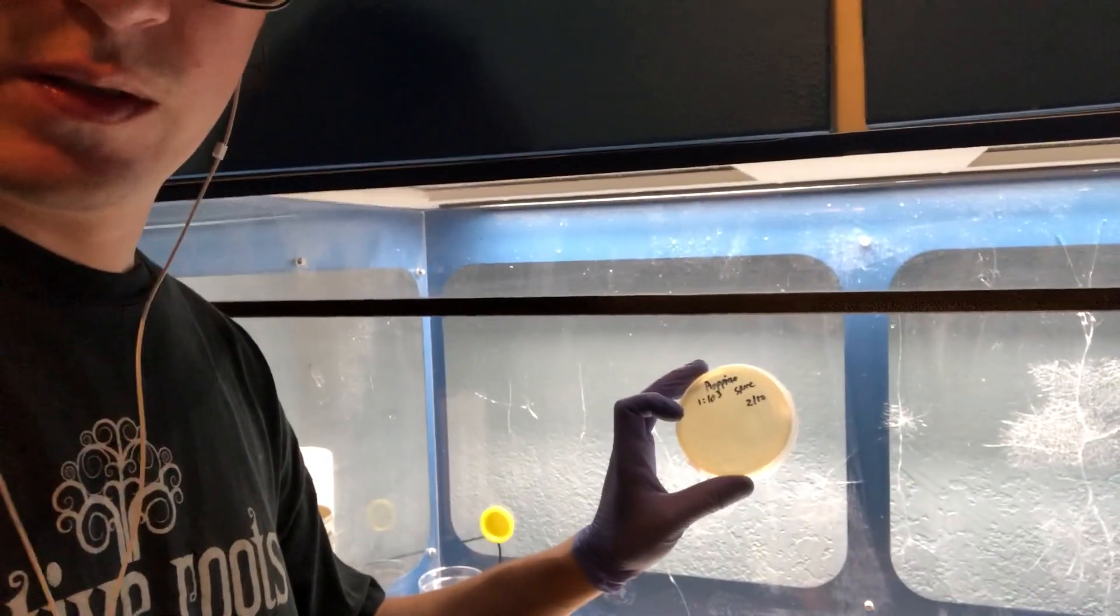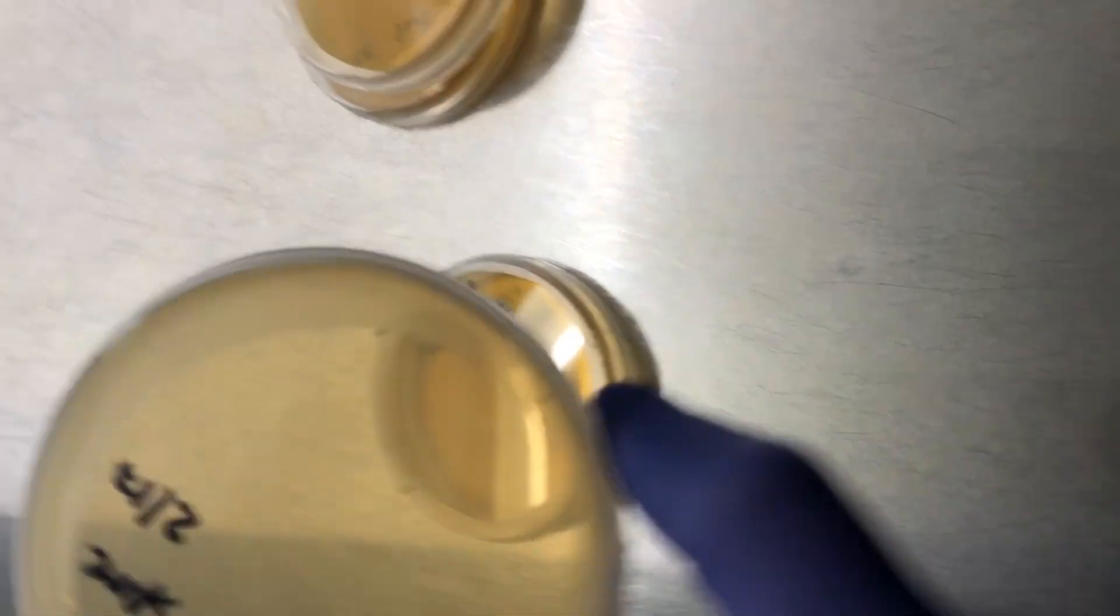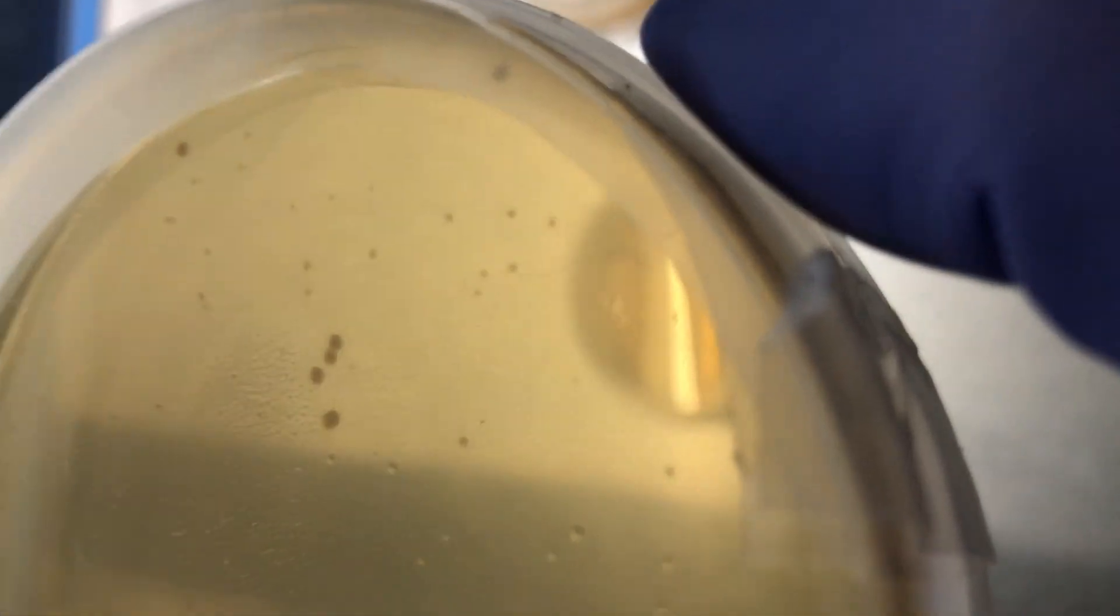All right, so I've got my Pea Pino dilutions here. I've got my 1 to 1000 and you can notice a couple colonies forming.